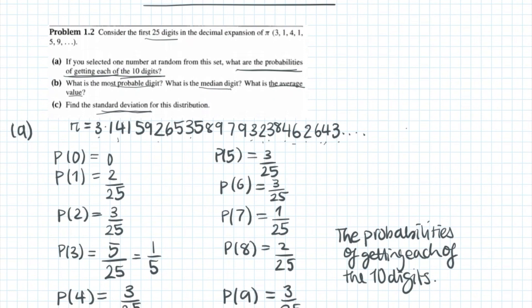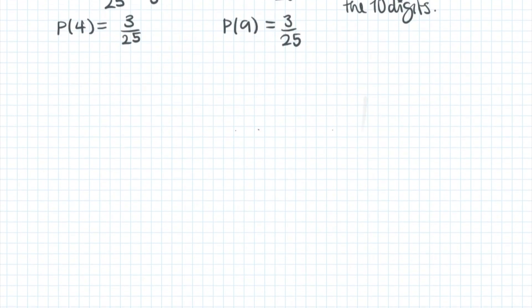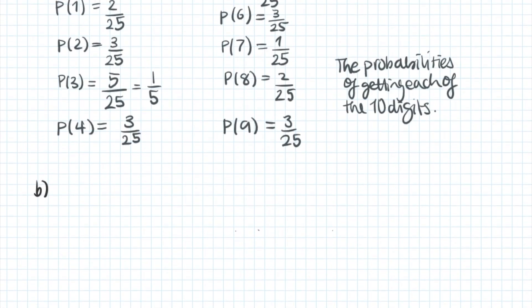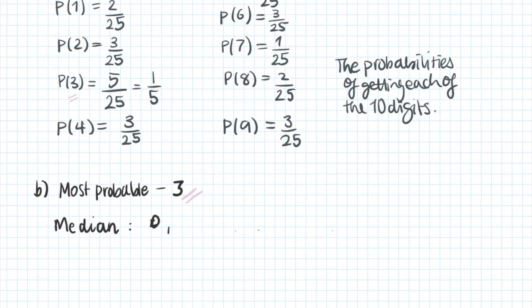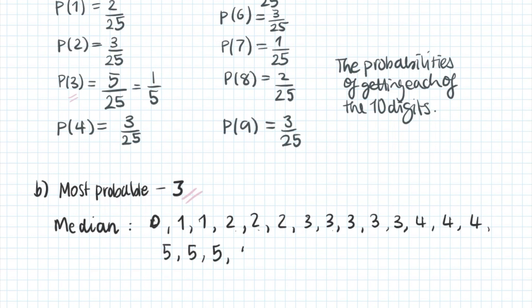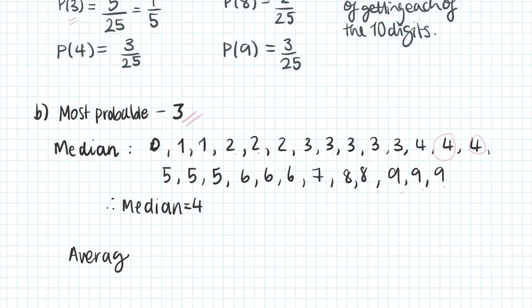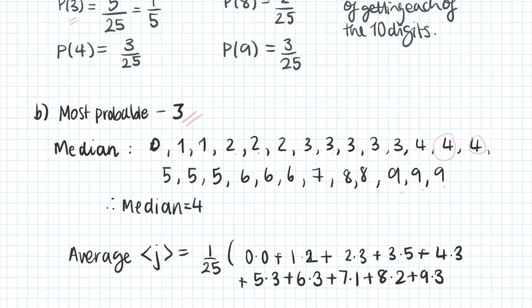Part b asks for the most probable digit, which is the mode — that would be 3 since it is the most common number. It also asks for the median: we write out all numbers in ascending order and see that the middle one is 4. Finally, part b asks us to work out the average using the general summation equation, and we get 4.72.